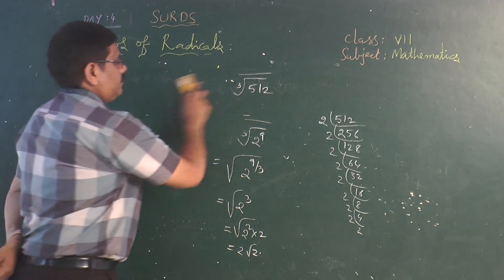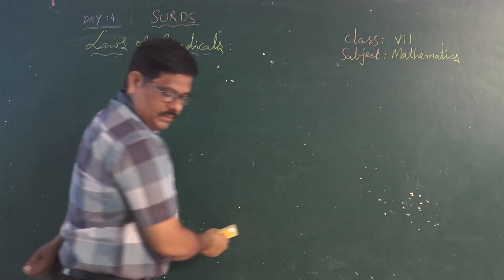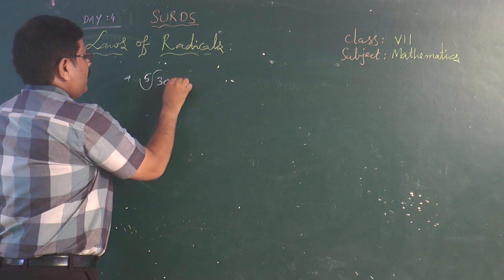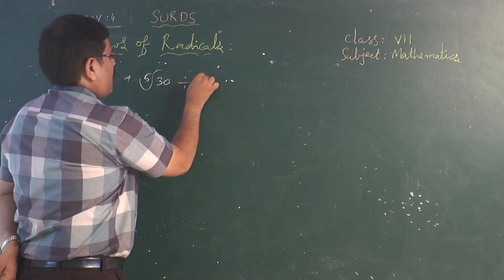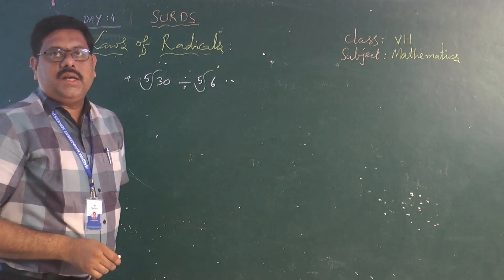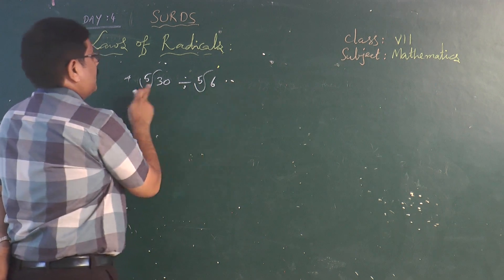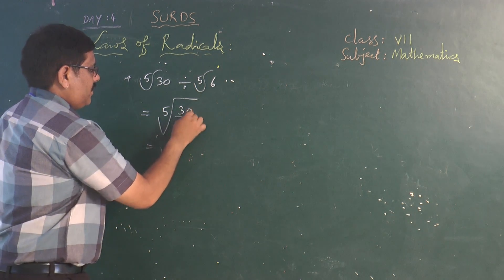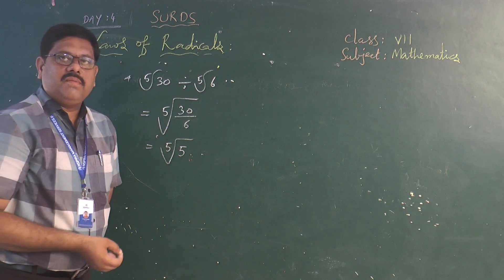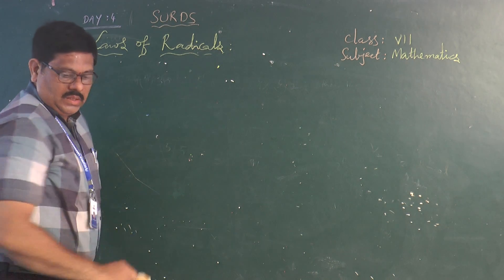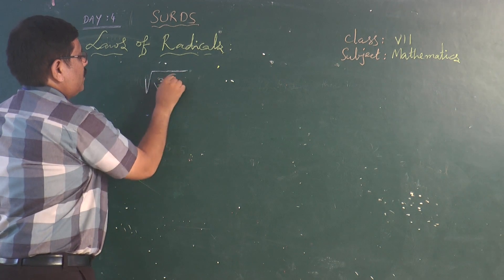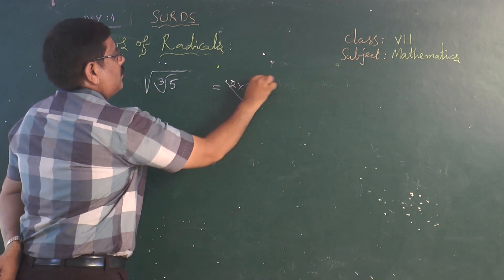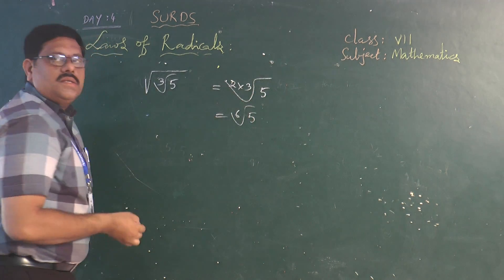Problem 4: What is the value of 5th root of 30 divided by 5th root of 6? Since the orders are the same, this equals 5th root of 30/6, which is 5th root of 5. Similarly, what is the value of square root of cube root of 5? Applying the nested radical rule, the order is 2 times 3 equals 6, so the answer is 6th root of 5.